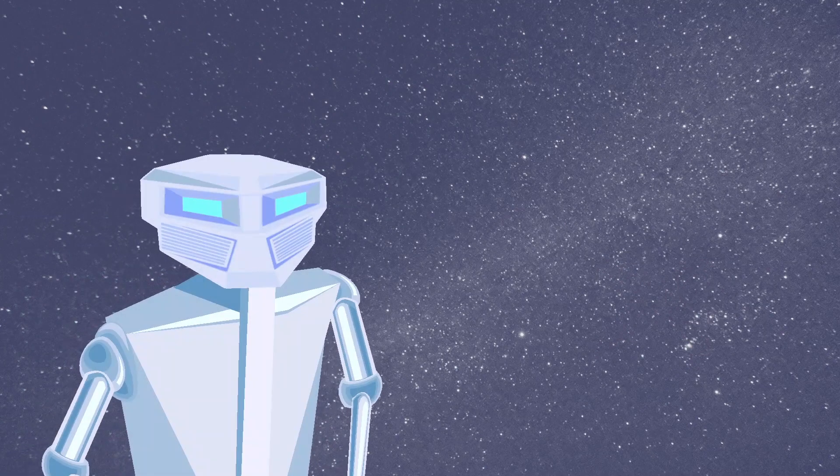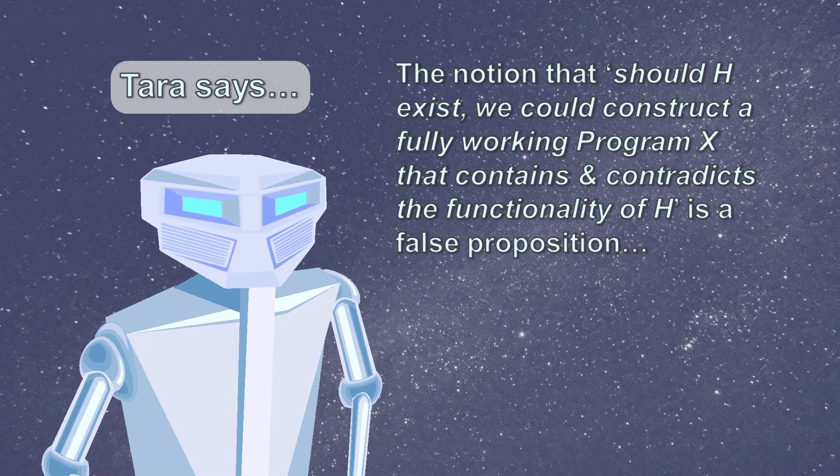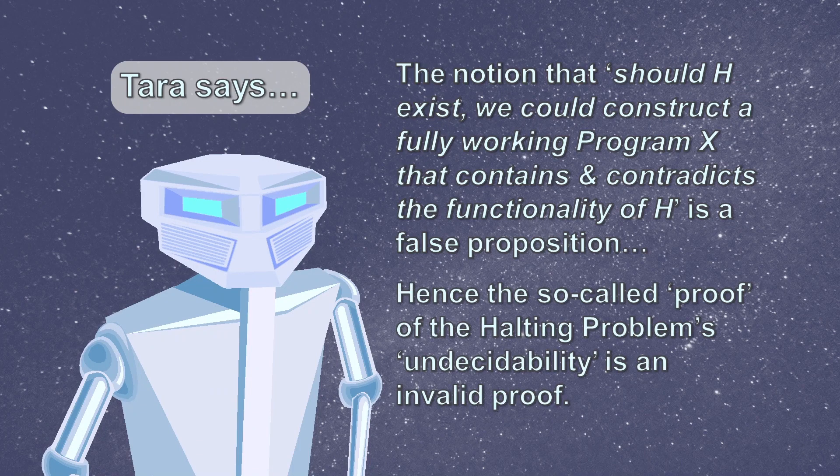Our friendly alien robot Tara proposes that the idea that we can construct a fully working Program X that will contradict H is a false proposition, and that the human's proof of the halting problem's undecidability must be wrong.